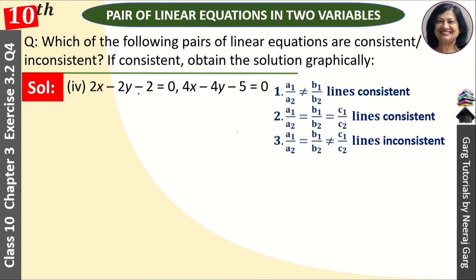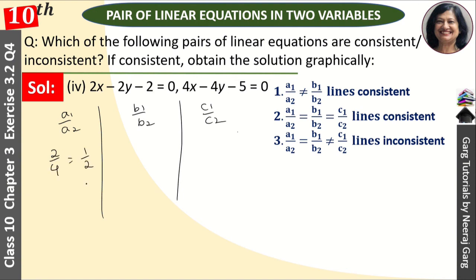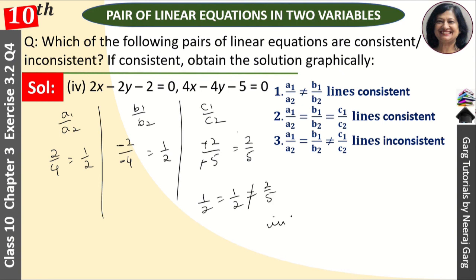For the fourth part: 2x minus 2y minus 2 equals 0 and 4x minus 4y minus 5 equals 0. We calculate a1/a2 = 2/4 = 1/2, b1/b2 = (-2)/(-4) = 1/2, and c1/c2 = (-2)/(-5) = 2/5. Since 1/2 equals 1/2 but is not equal to 2/5, these lines are inconsistent — they are parallel with no solution. Hope you understood the question. Please subscribe, like, and share the video.